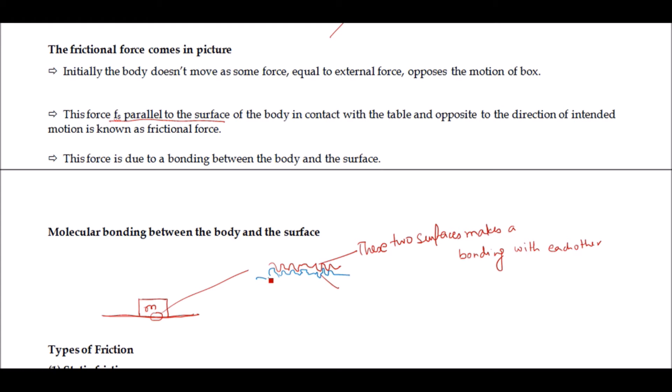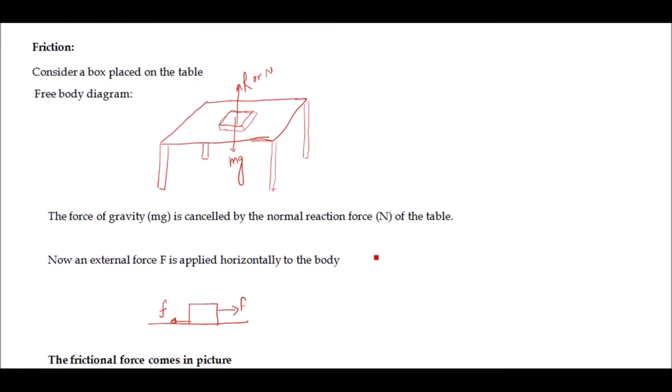We will discuss friction. If I place an object on a table and push or pull it, initially a resistance comes into picture and the object will not move if a small force is applied. This can be understood using the free body diagram shown here. If you see the free body diagram, a gravitational force mg acts in the downward direction.